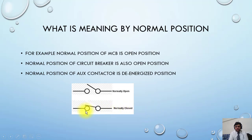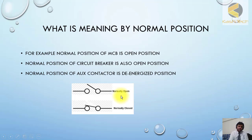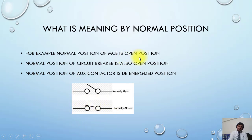As per drawing philosophy, if the MCB is at normal position it will be open; if MCB is at closed position this will be closed. If I make the MCB open and check the continuity, I will find this contact open, and if I check the other contact I will find continuity there.